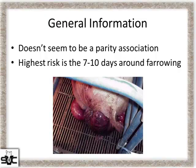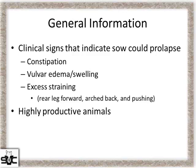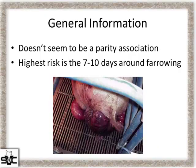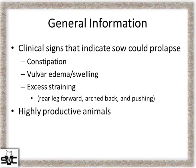With prolapses, there doesn't really seem to be any parity association — they seem to follow a normal parity curve for a given sow farm. The highest risk time frame is generally five days pre-farrow to five days post-farrow. We can sometimes identify higher-risk animals right around that time of farrowing. Signs we normally see include constipation, a bulging perianal area, vulvar swelling, edema, and excess straining — back leg pushed forward, arched back, pushing hard but no piglets.